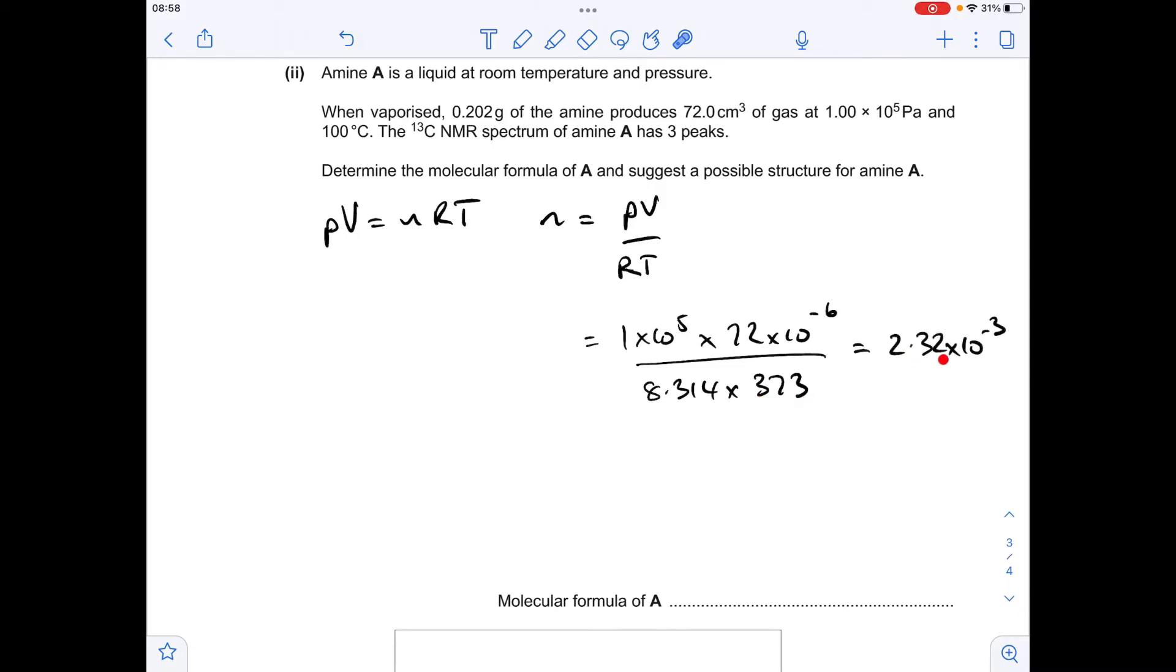I'm keeping the full number in my calculator, so now divide the mass by the moles, which gives an MR for the amine of 87.